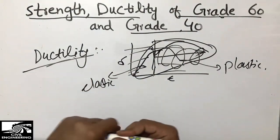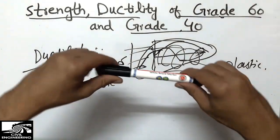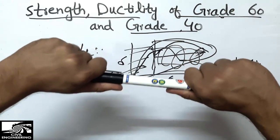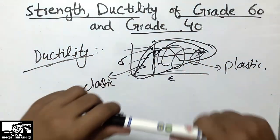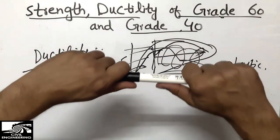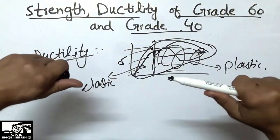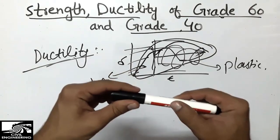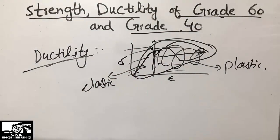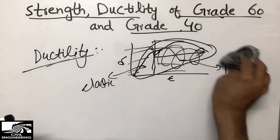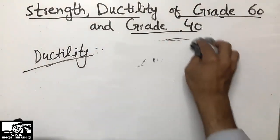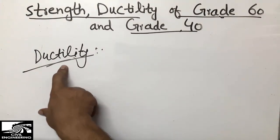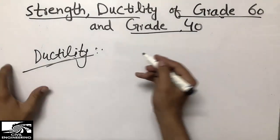For example, if I take a material and pull it and it deforms more plastically, that means it is a more ductile material. On the other hand, a material that just fractures immediately upon loading without significant plastic deformation is a brittle material. So the definition of a ductile material is: if a material goes more into plastic deformation, we call it a ductile material.